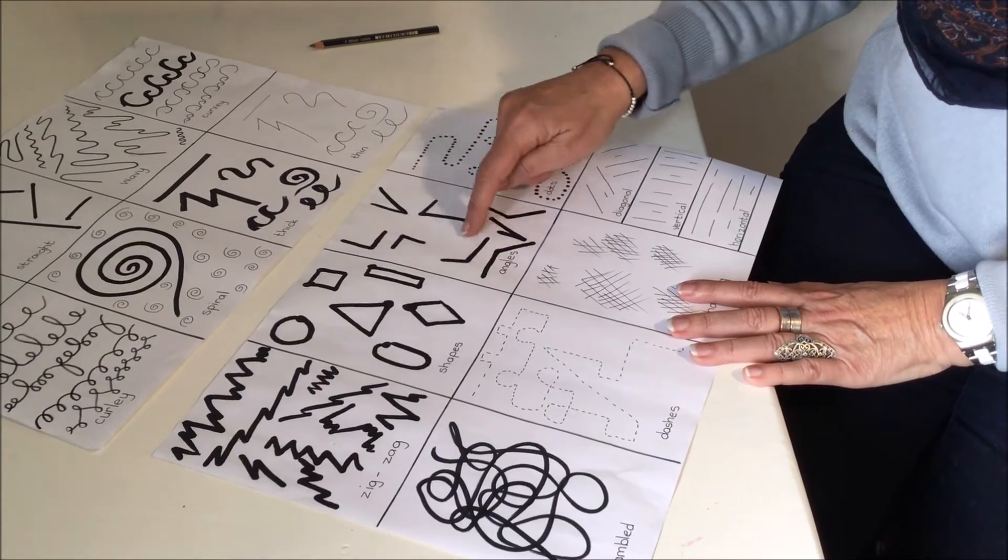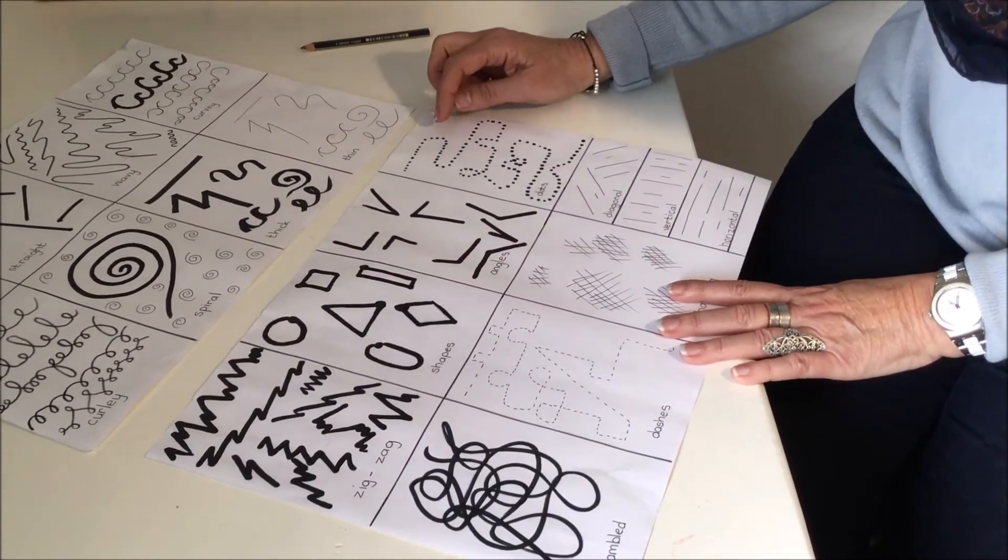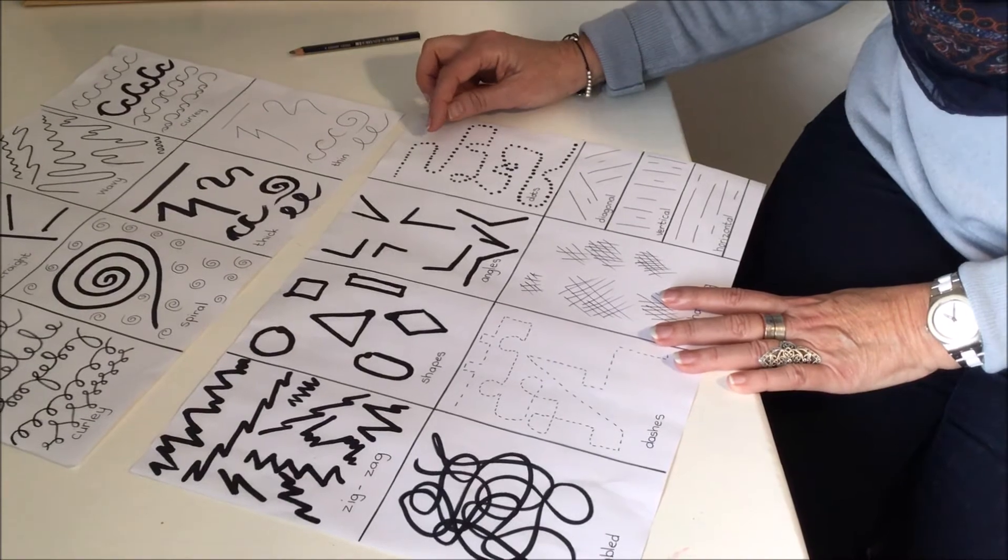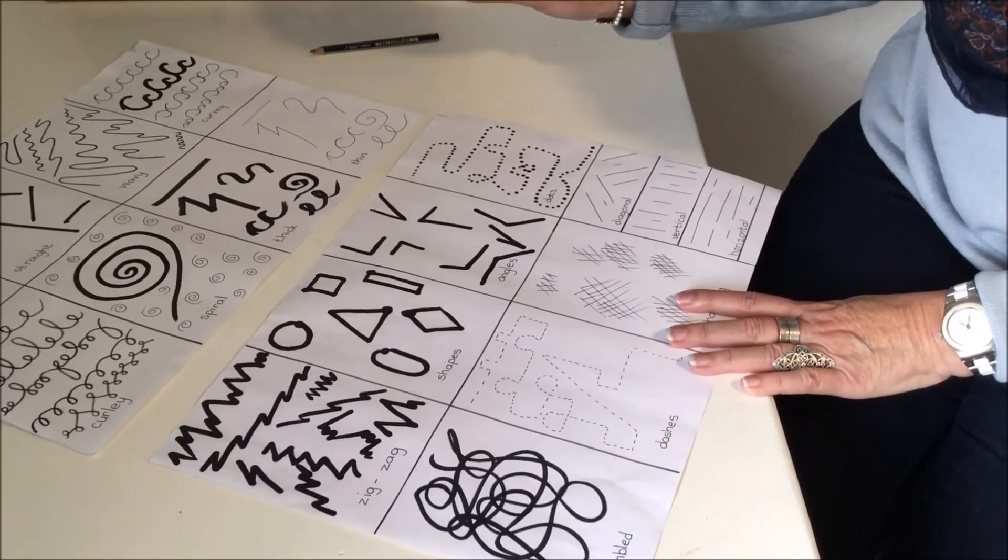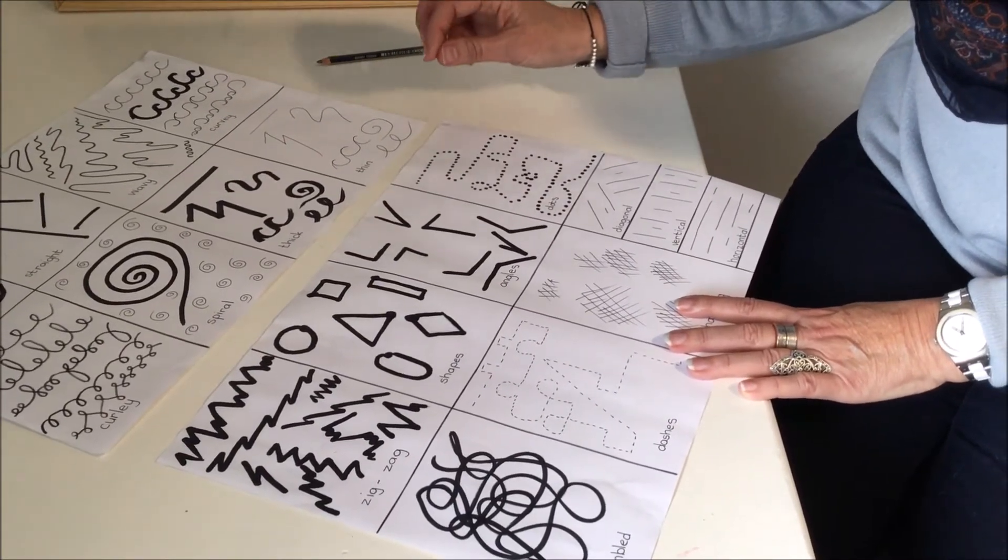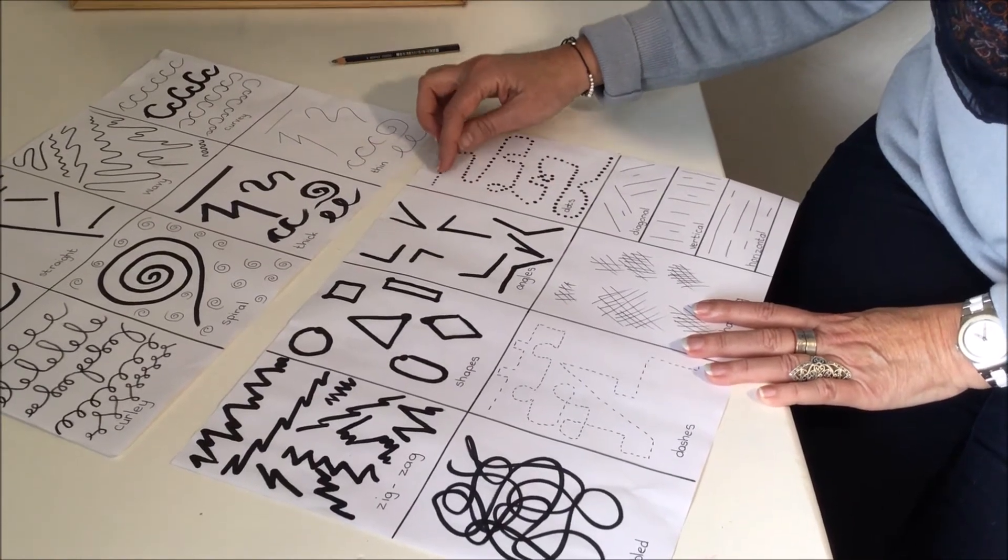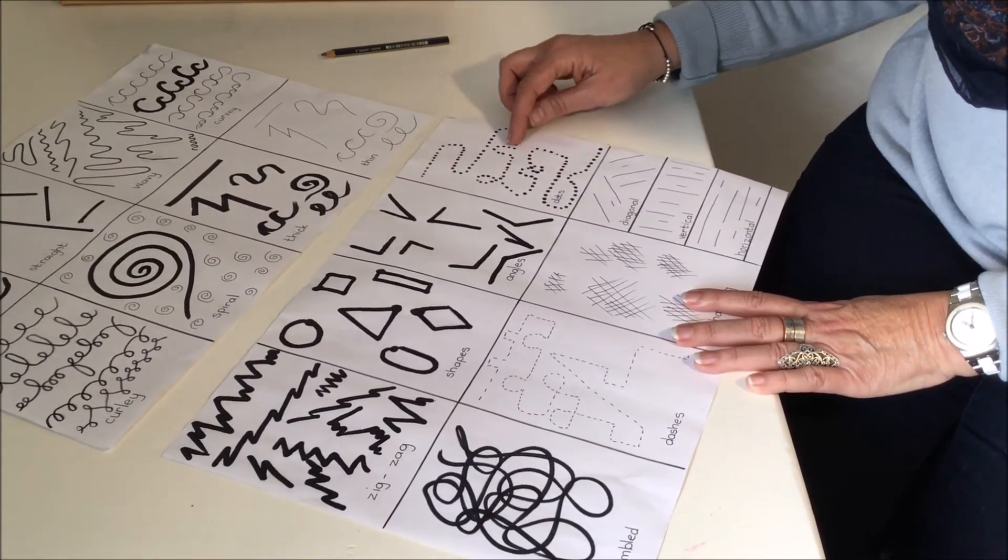Angles, different angle lines. Now we say that a line is when we don't pick up our pencil or our crayon, but here we have picked up our pencil but we've still created a dotted line.